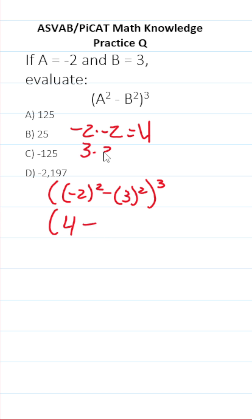3 squared is 3 times 3, which is 9, so this is 4 minus 9 to the third power.